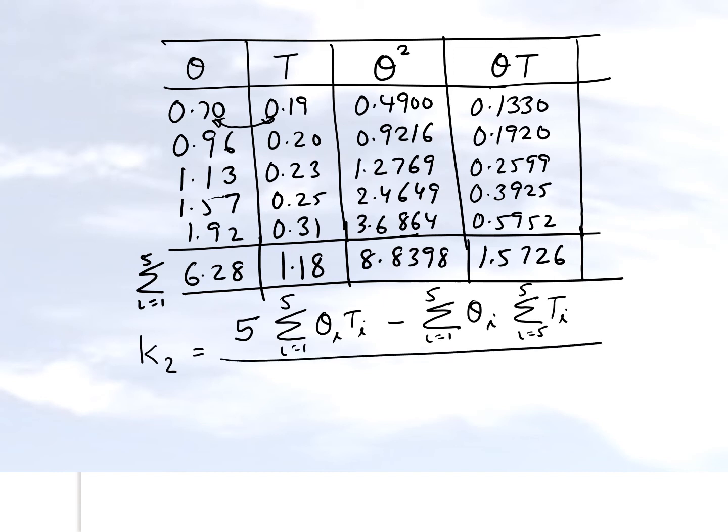And we divide it by five times the summation of the theta square values. And then sum the theta i values and we square those. So that's what we have here.